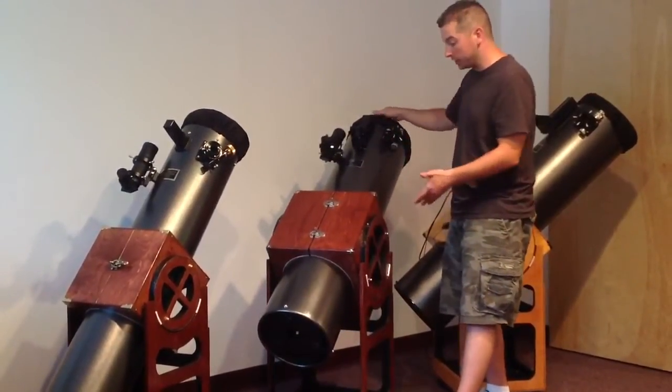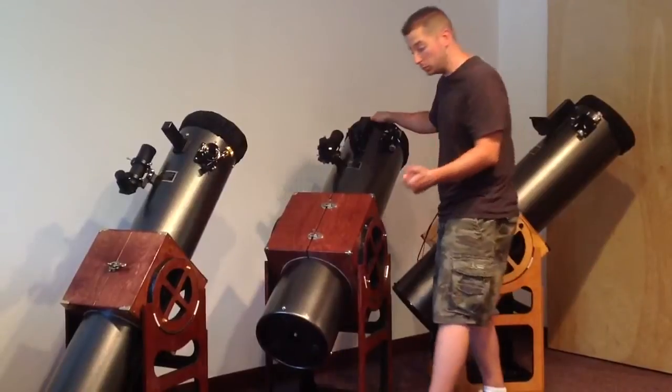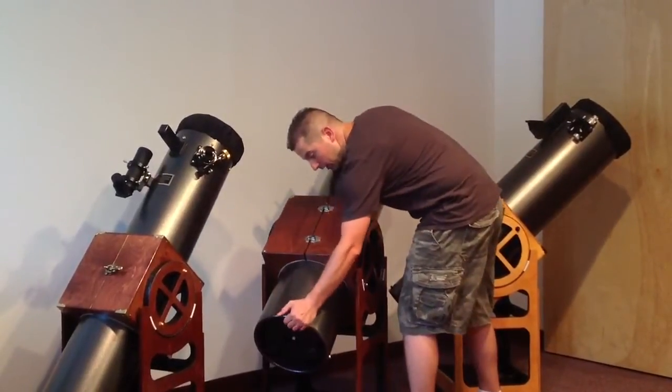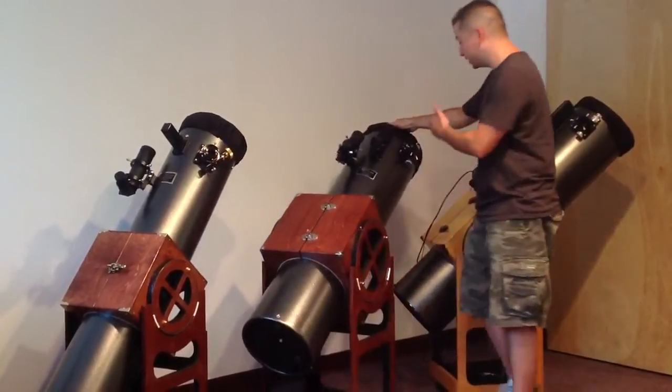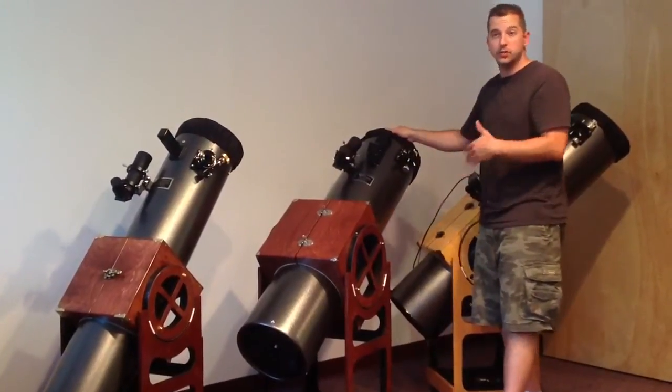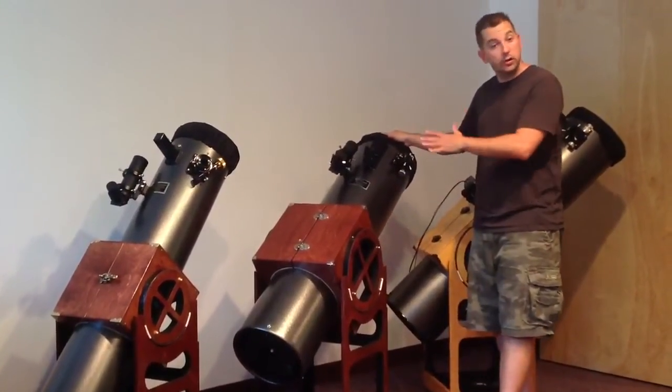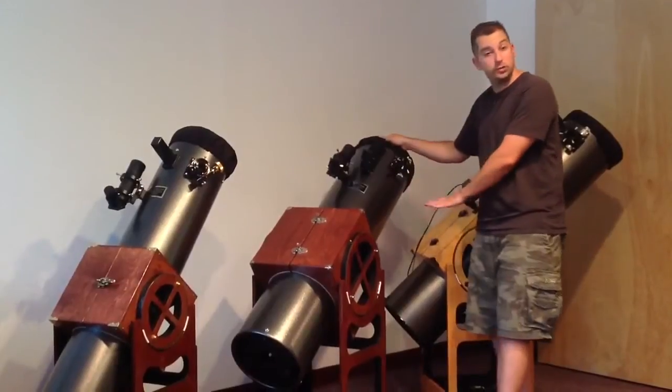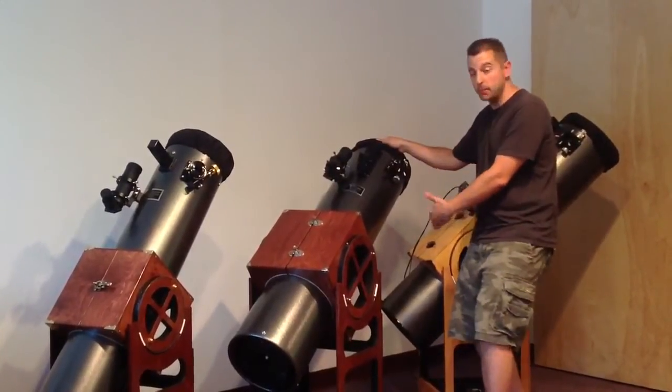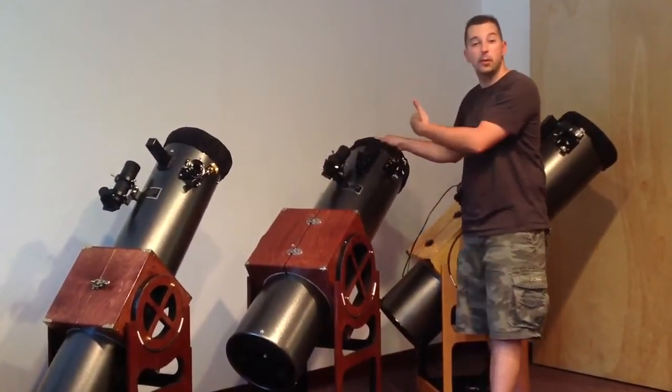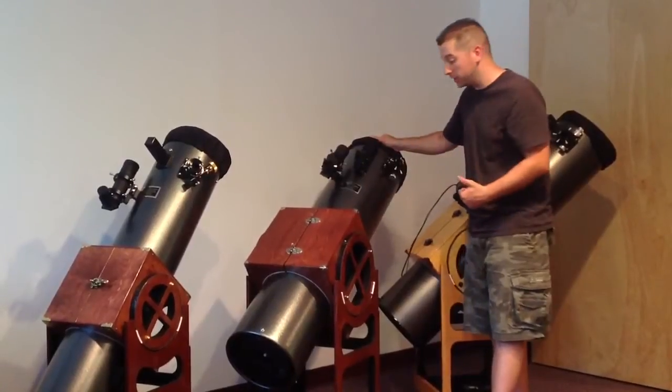This also allows us to rotate the tube. So if we take both hands and rotate the tube, we can then change the angle of the eyepiece, which is better for younger kids that want to use the telescope that are a little bit shorter. We can rotate the eyepiece down to them, or rotate the eyepiece up for taller people looking through the telescope.